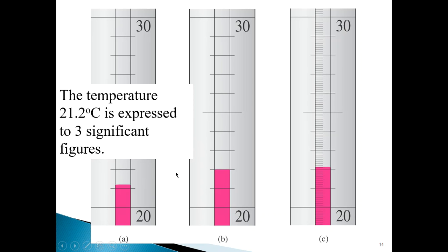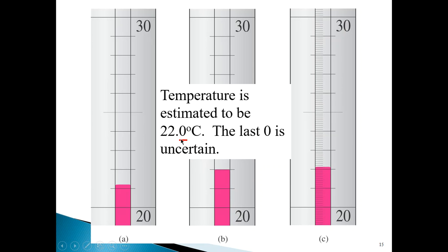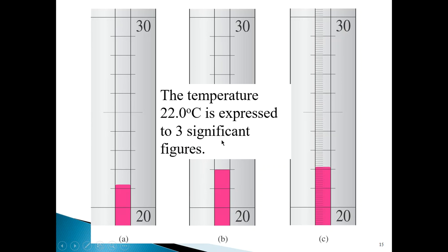In the case of the second thermometer, the same system of graduation is used. But here, the mercury level seems to be exactly at the 22 mark. You might be tempted to say the temperature is 22; however, whatever level of precision is represented by this thermometer will be the same as the first. So if you think the mercury level is exactly at the 22 mark, then the temperature reading you'd have to record must be 22.0 — you have to put a 0 to indicate it is an estimated digit. Therefore, the number of significant figures expressed here is 3.